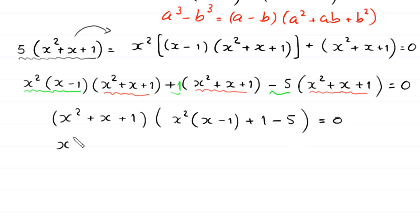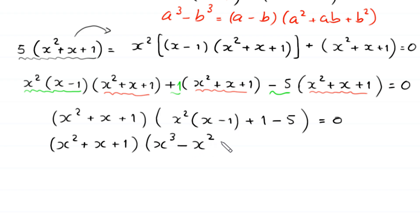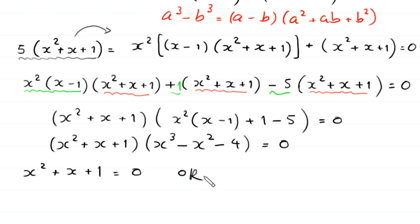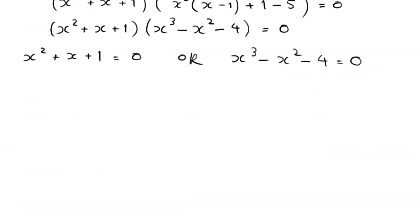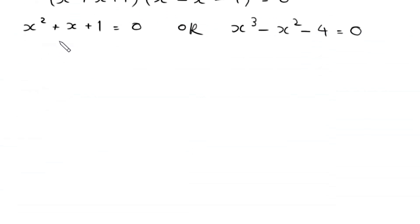Expanding the bracket: x²(x - 1) = x³ - x², and 1 - 5 = -4. So we have (x² + x + 1)(x³ - x² - 4) = 0. From here, either x² + x + 1 = 0 or x³ - x² - 4 = 0.